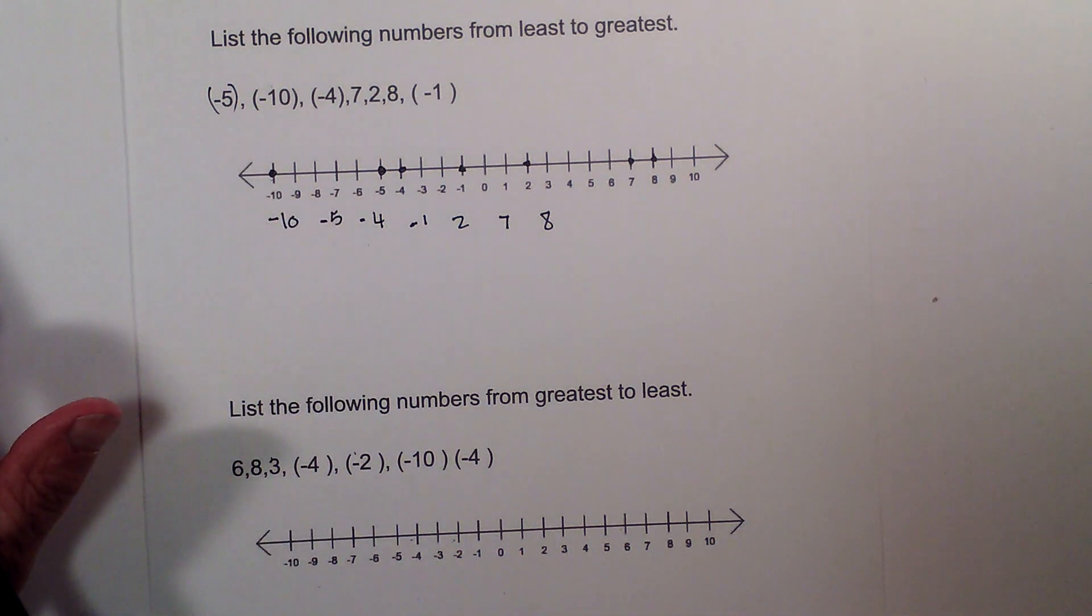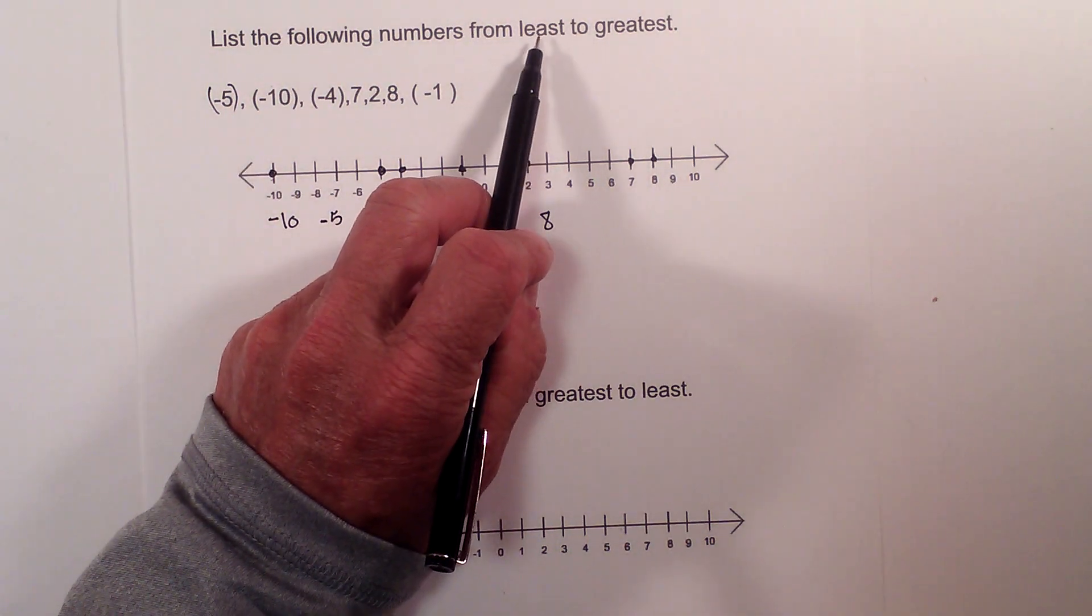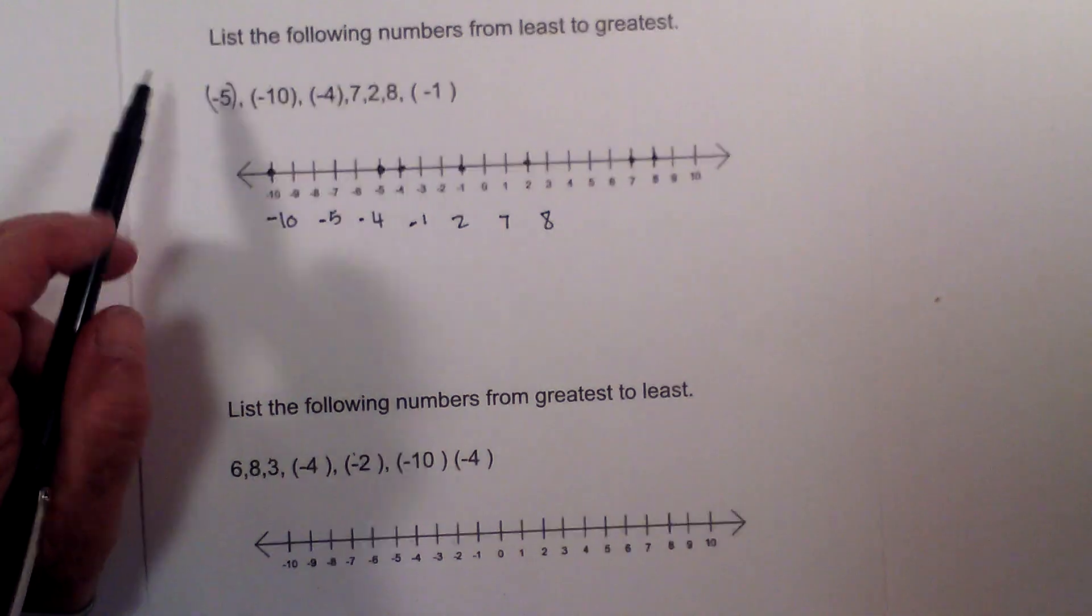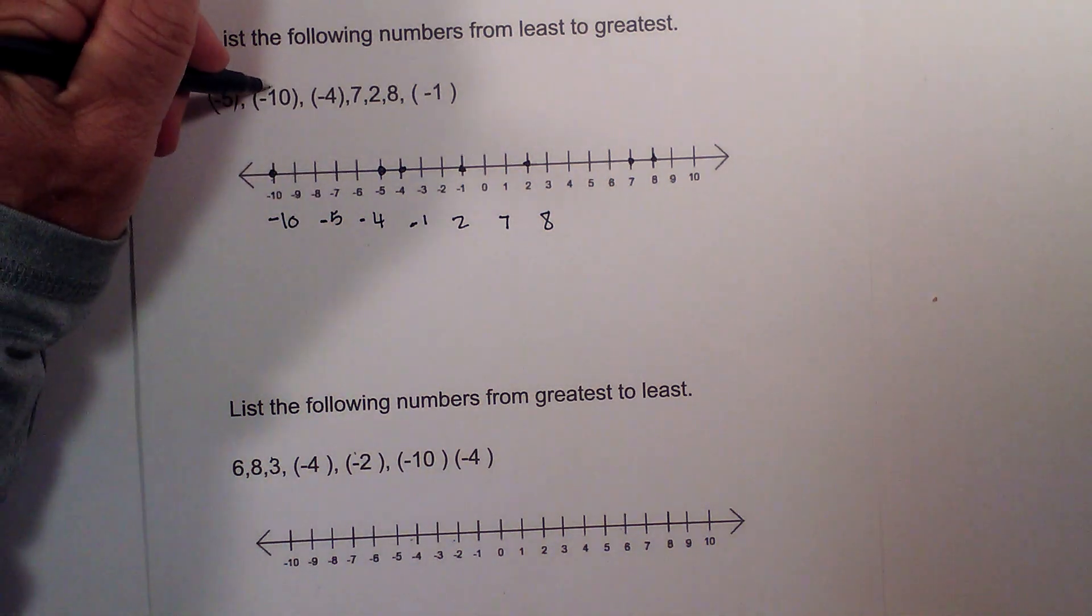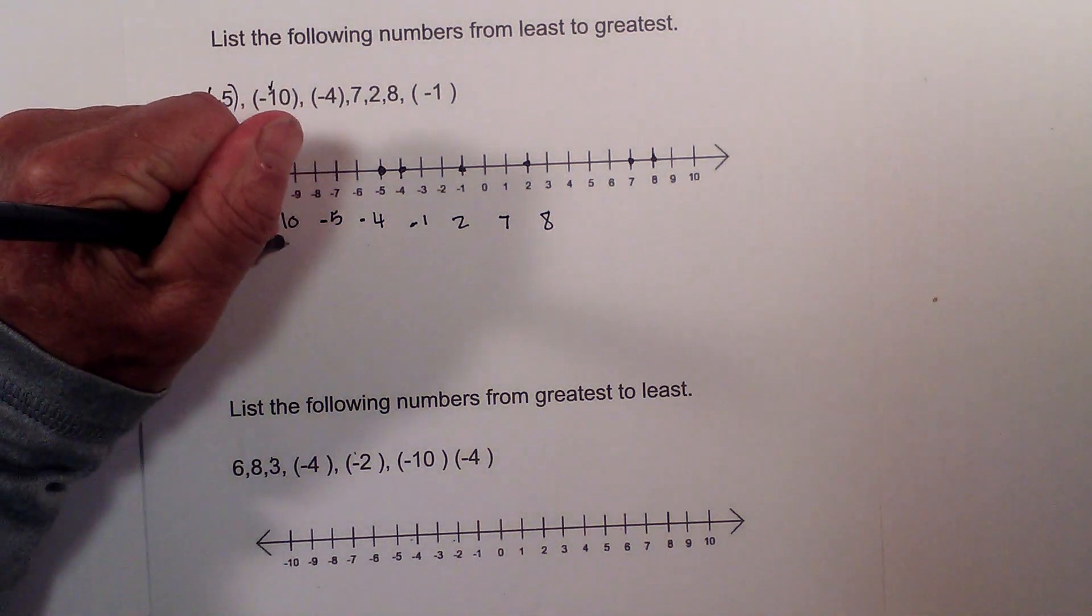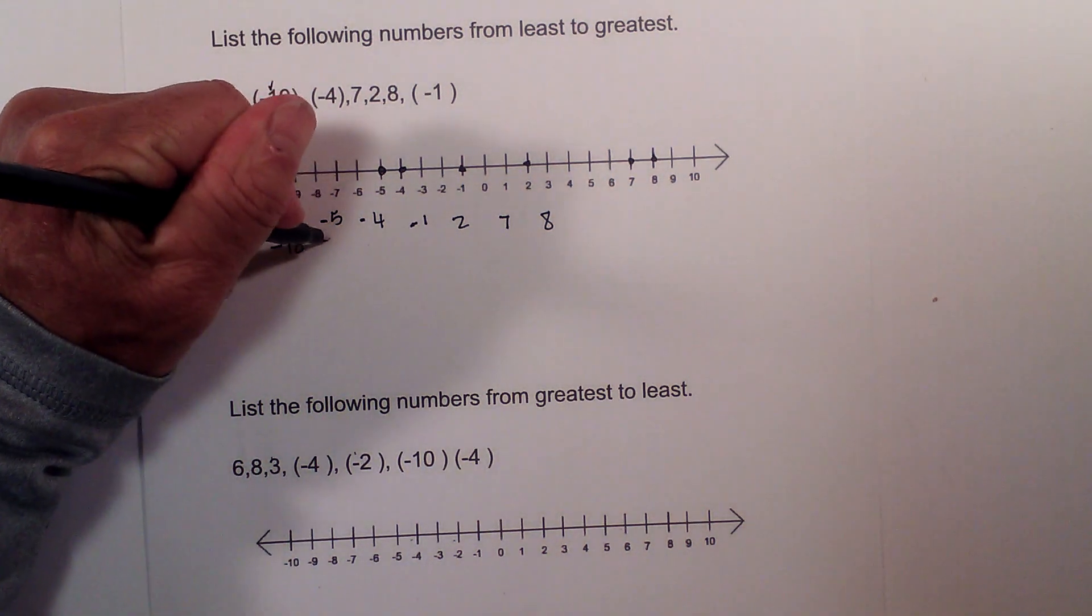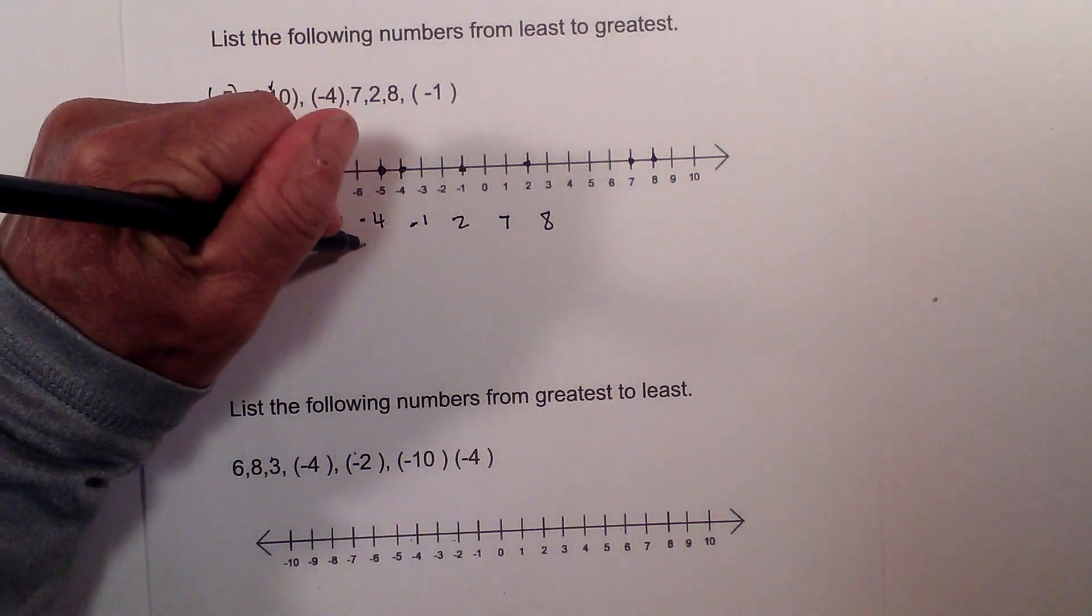If you do not want to use a number line, since I am starting at least, I will start with the negative numbers. Remember the larger the negative number, the smallest it is. So 10 is the largest negative number, so it is going to be the smallest, then negative 5, then negative 4.